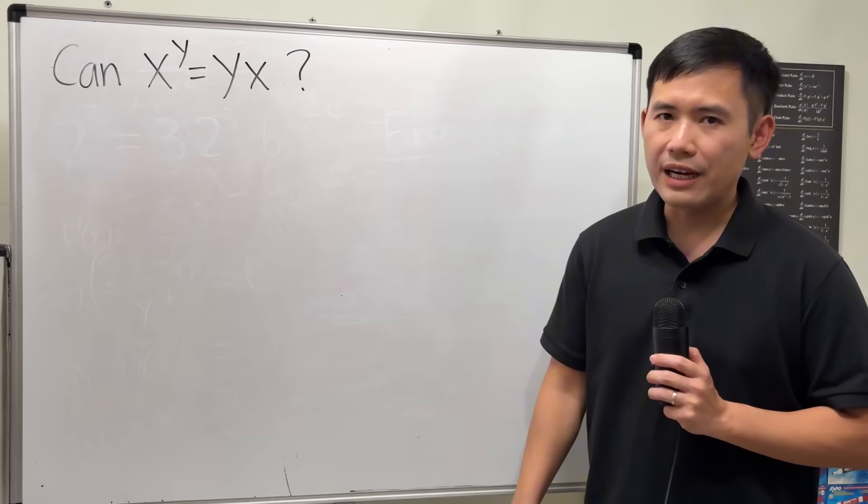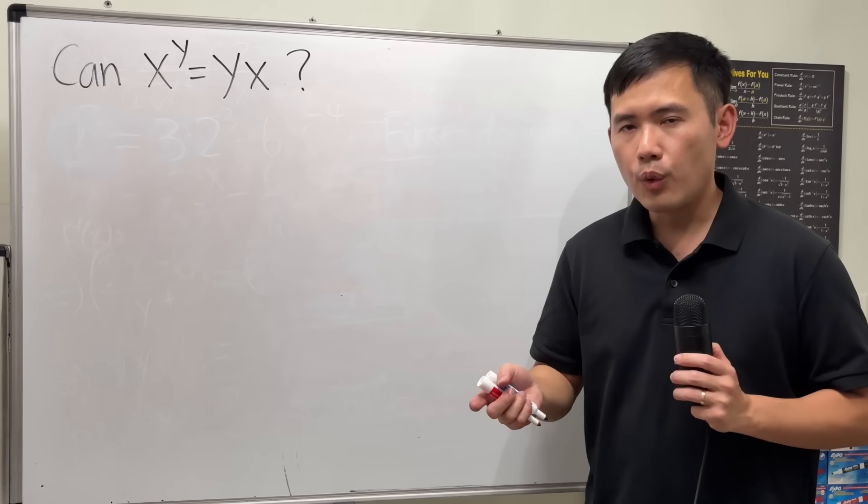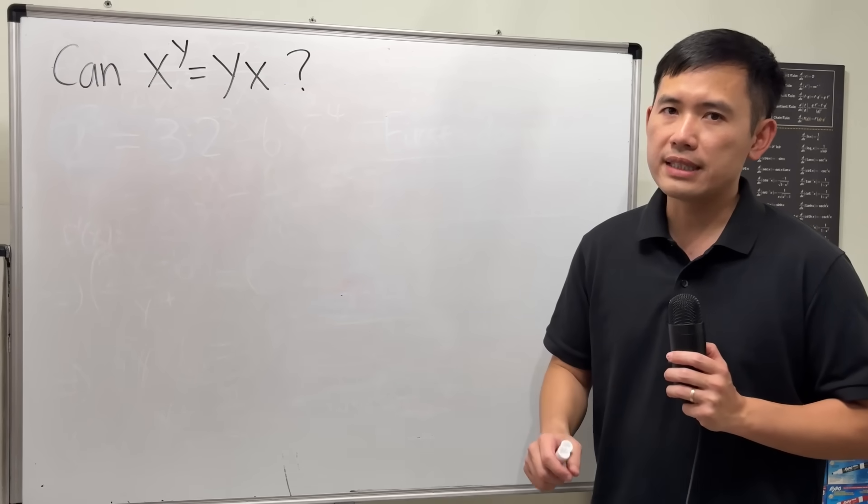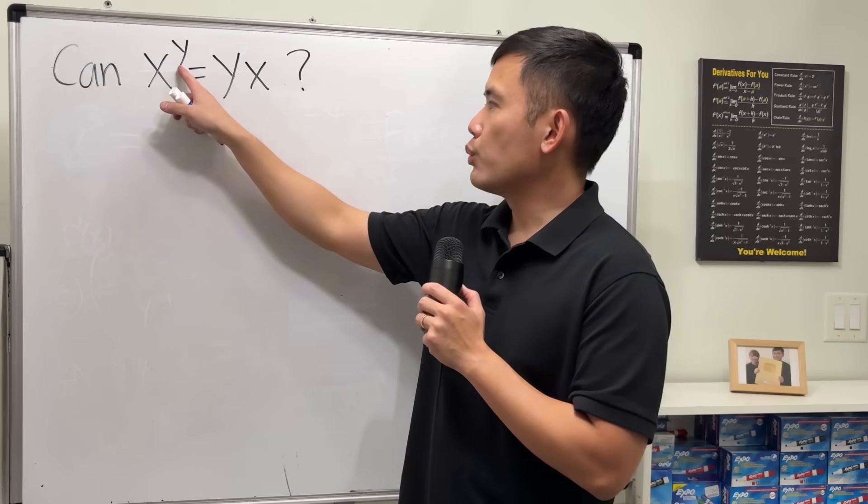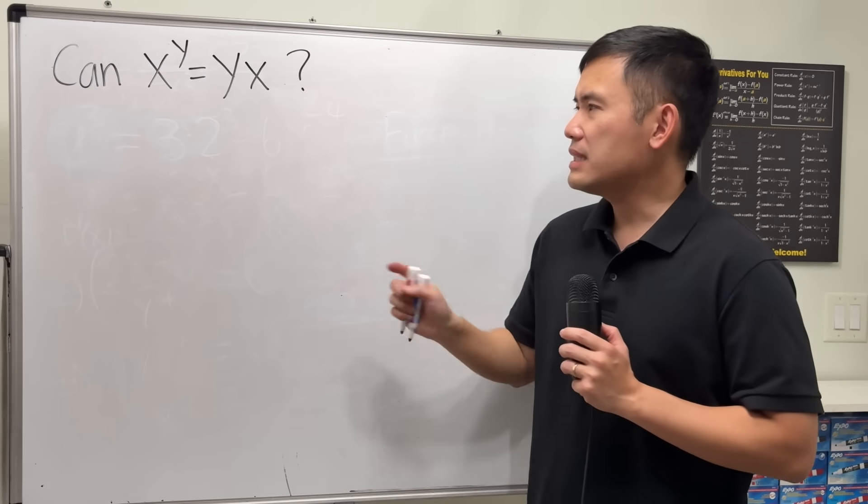So, is it possible for us to have two numbers, let's say x and y, so that their power is equal to their product? That is, x to the y's power is equal to y times x. Let's have a look.